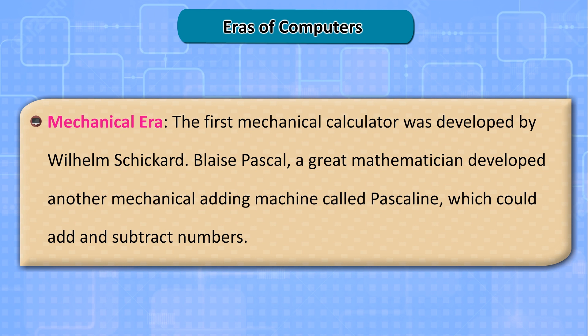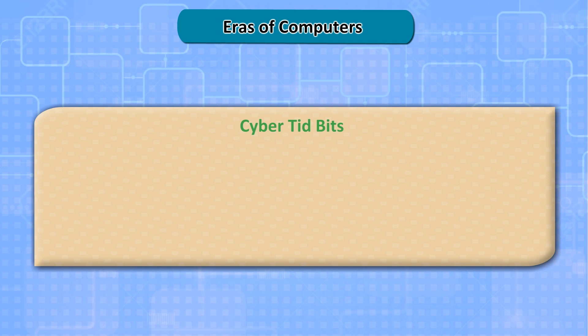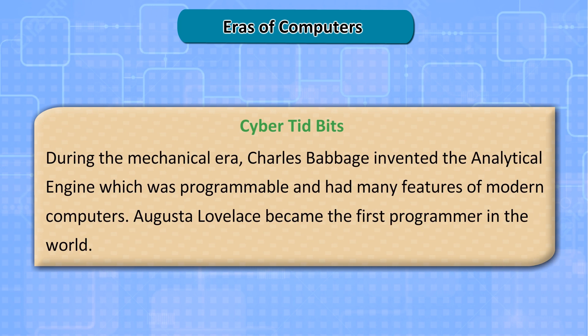Mechanical Era. The first mechanical calculator was developed by Wilhelm Schickard. Blaise Pascal, a great mathematician, developed another mechanical adding machine called Pascaline, which could add and subtract numbers. During the mechanical era, Charles Babbage invented the analytical engine which was programmable and had many features of modern computers. Augusta Lovelace became the first programmer in the world.